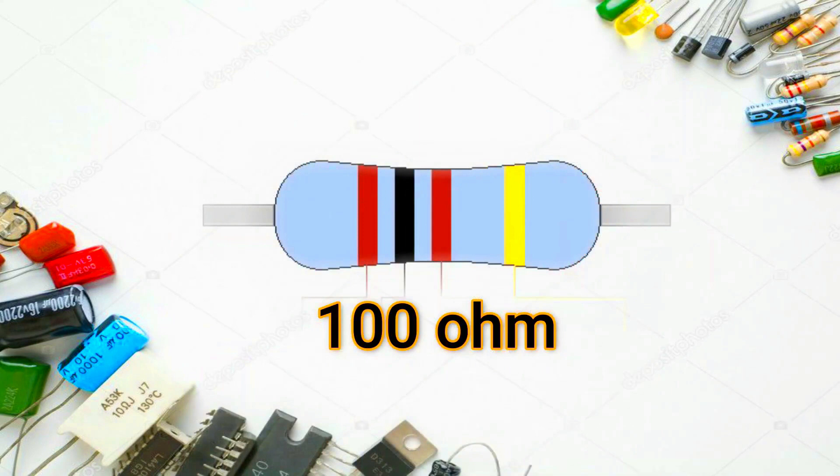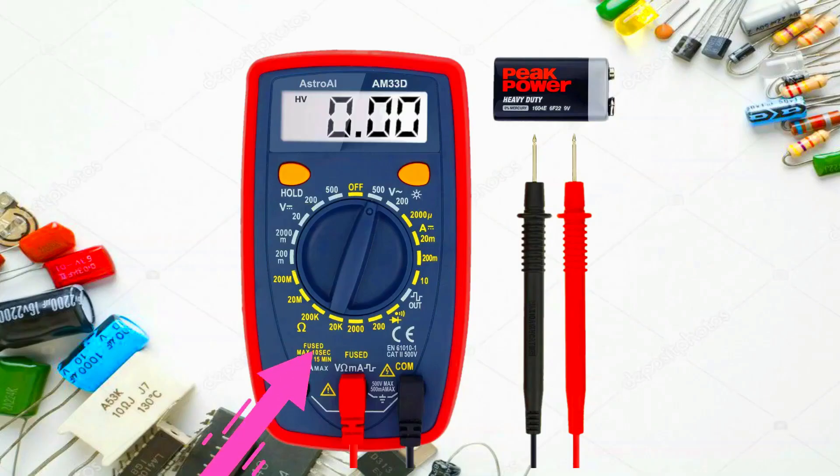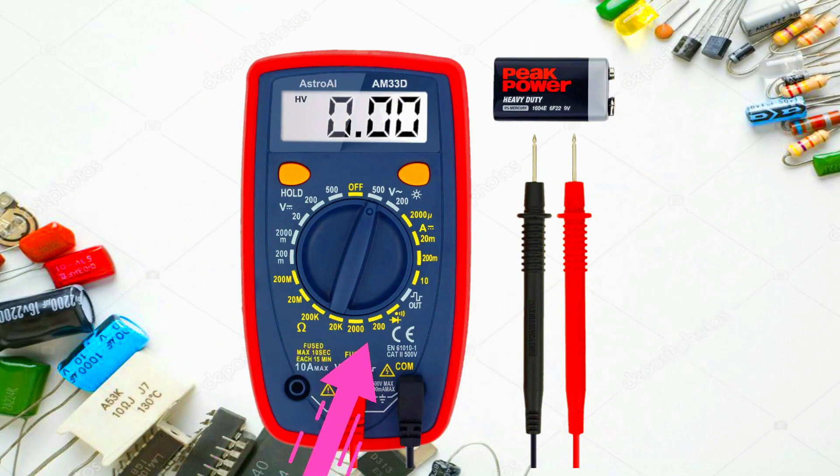For example, if you are measuring a 100 ohms resistor, you should not set your multimeter to 2,000 kilo ohms. Set it to 200 ohms to get the correct value.